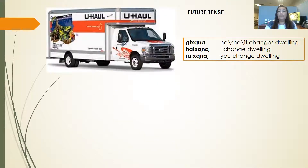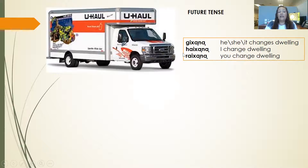Future tense sentences. When we're talking about future tense, we're going to add k'jane to the end of the verb. So gi'chana is he, she, or it. Hai'chana is I. Rai'chana is you.